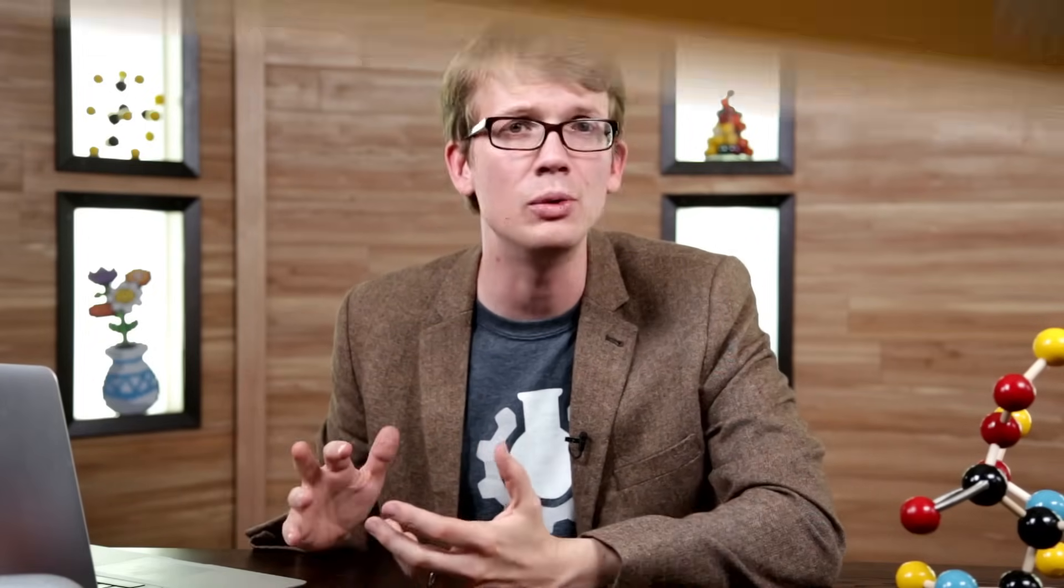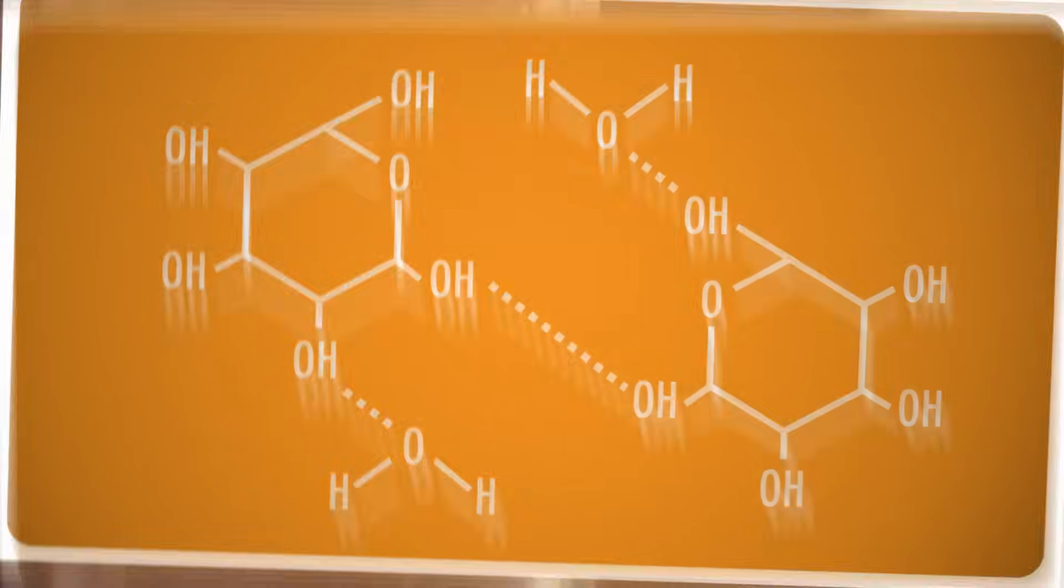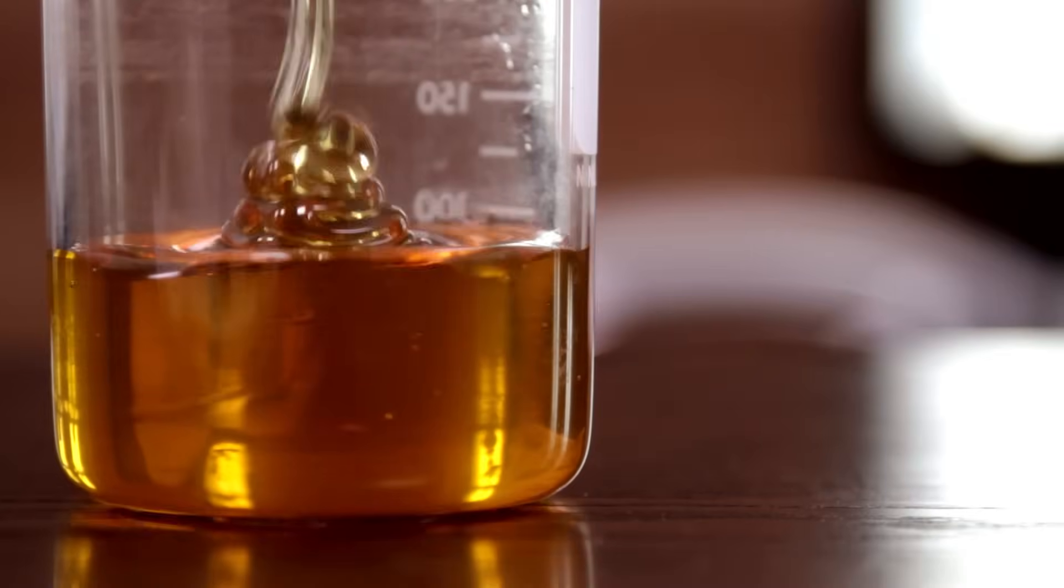For example, in molecules with very large intermolecular forces, like the molecules in honey, which have tons of oxygens and hydrogens just itching to form hydrogen bonds with each other, the cohesion is so great that it makes the liquid flow very slowly. That resistance to flow is called viscosity, and you can see it in liquids like honey, syrup, oils, glycerol.